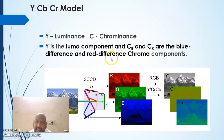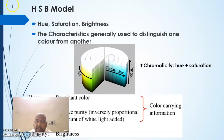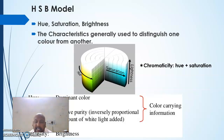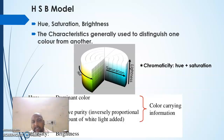In the HSB model, H means Hue, S means Saturation, and B means Brightness. These are the characteristics generally used to distinguish one color from another, so the HSB model is helpful to differentiate one color from another.